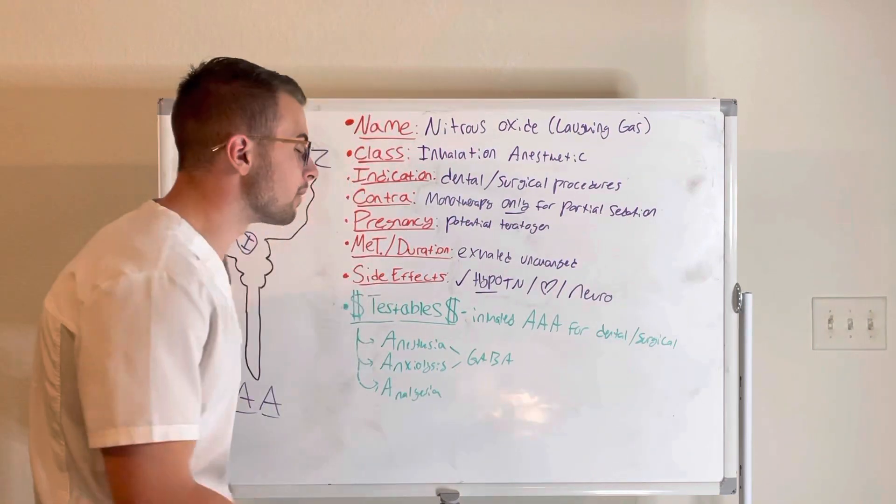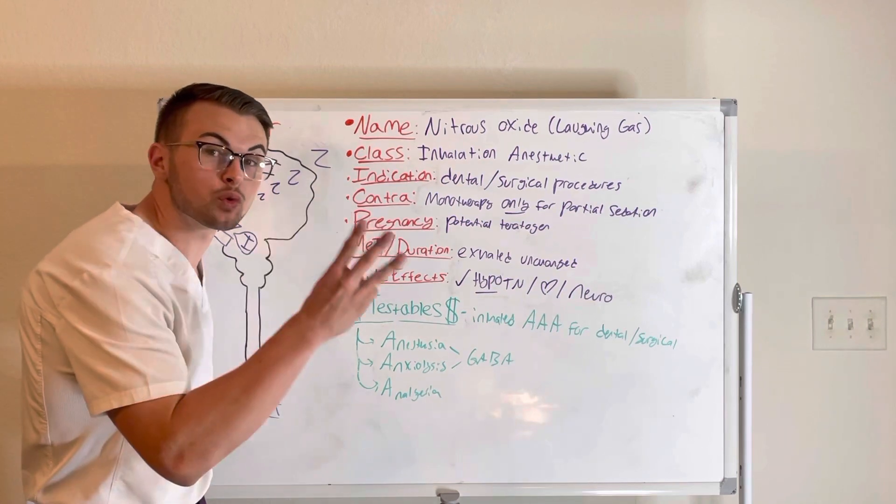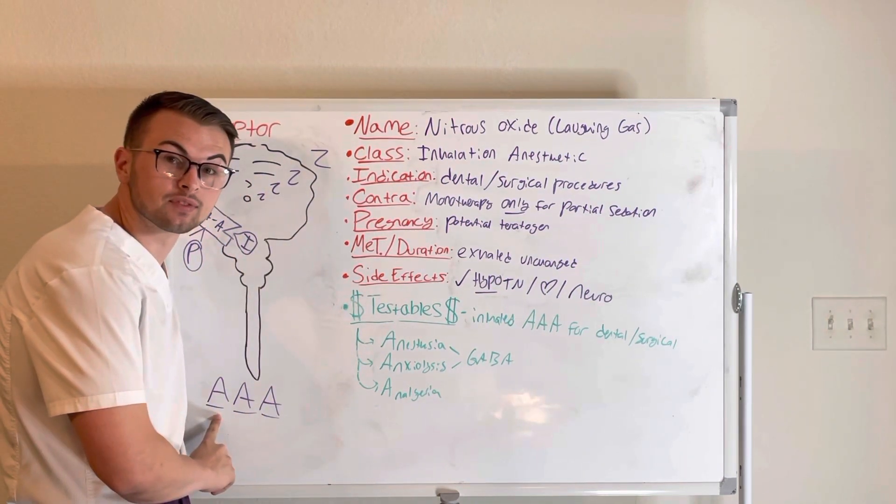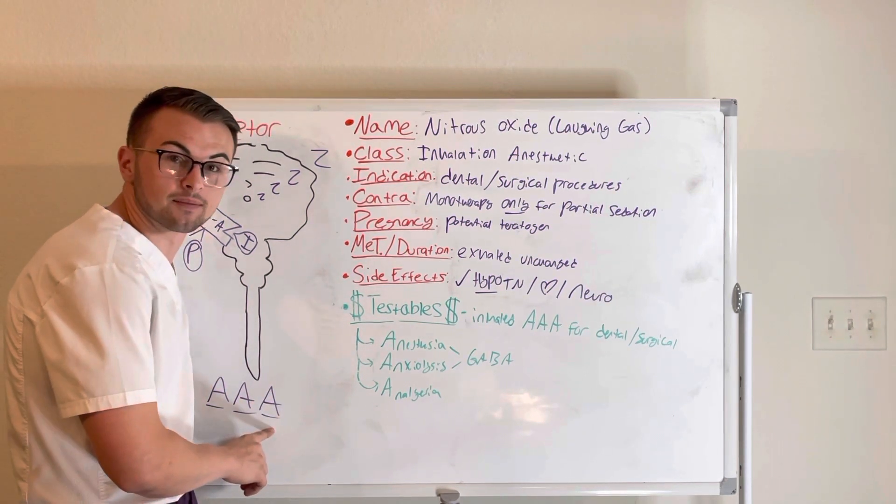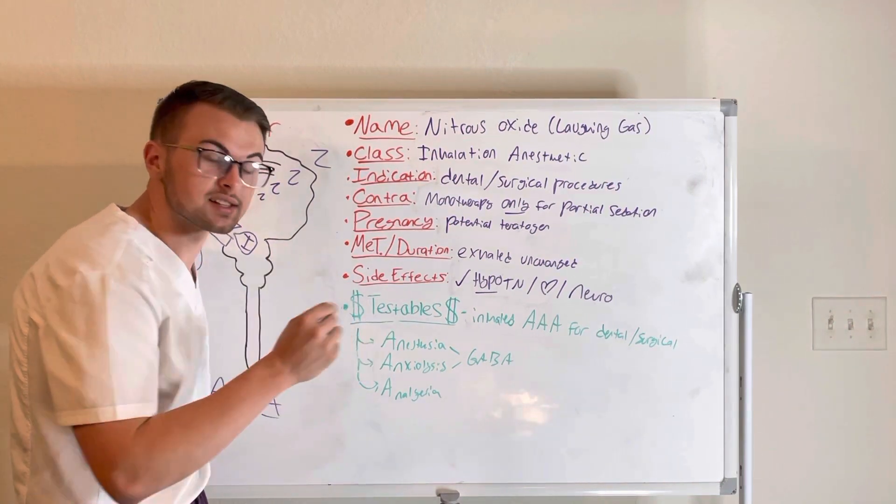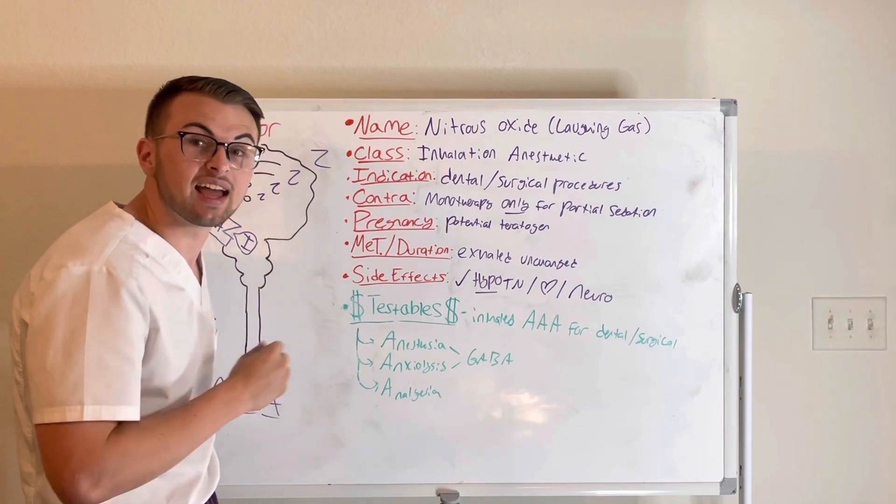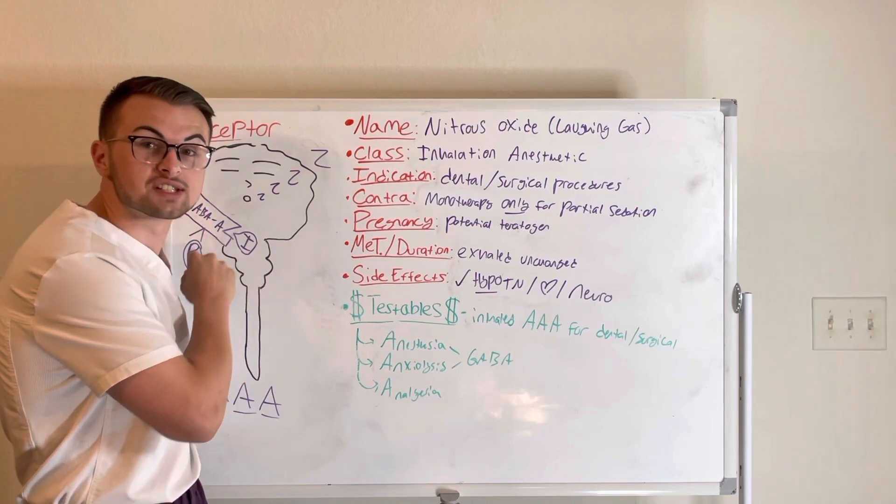The mechanism of action for this drug is the triple A, or three A's of laughing gas: anesthesia, anxiolysis, and analgesia. It works in similar ways as opiates to decrease pain, and it works to decrease anxiety and as an anesthetic by activating our GABA receptors.